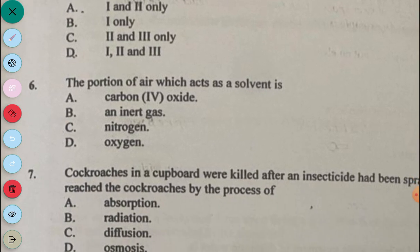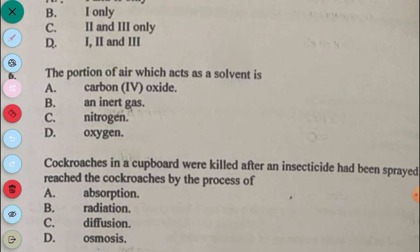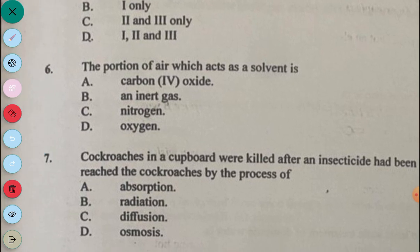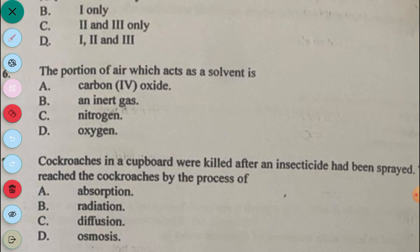Number 7: Cockroaches in the cupboard were killed after an insecticide had been sprayed. The insecticide reached the cockroaches by a process of A, absorption; B, radiation; C, diffusion; D, osmosis. The process through which the insecticide reached the cockroaches is diffusion — C.